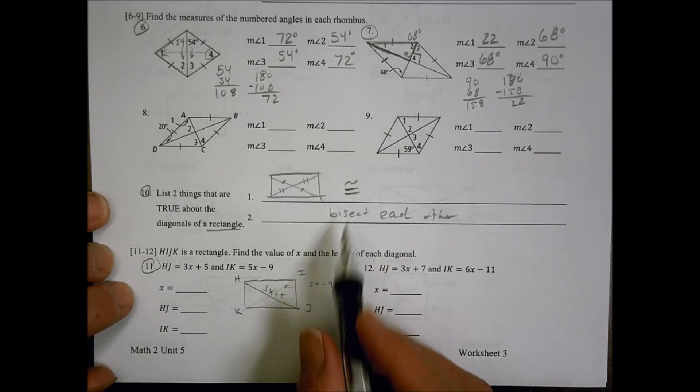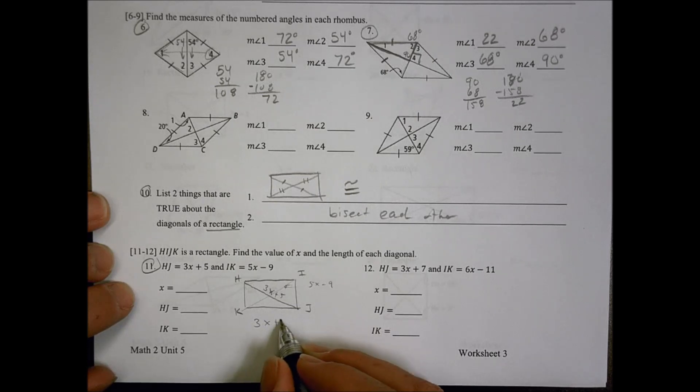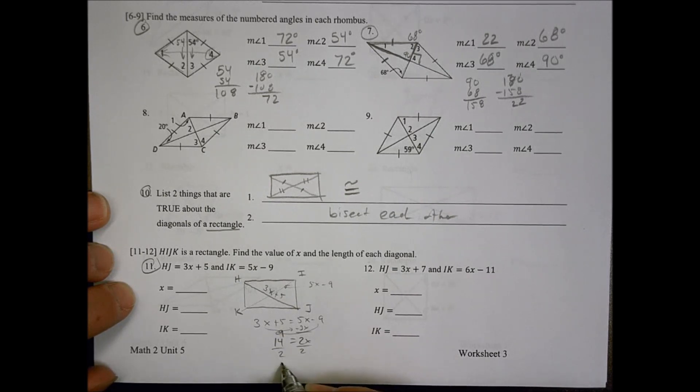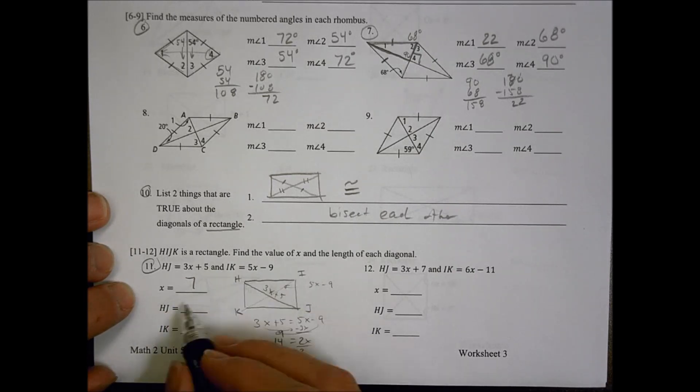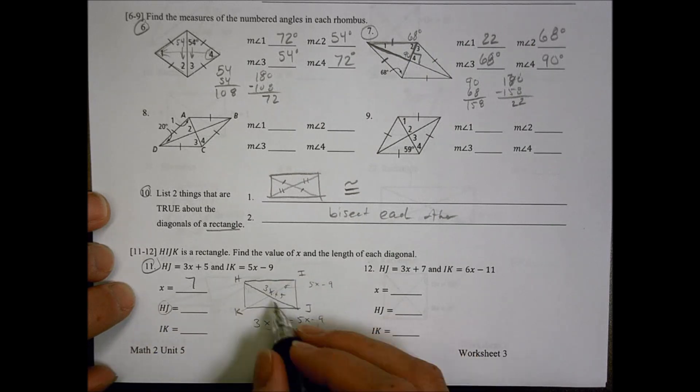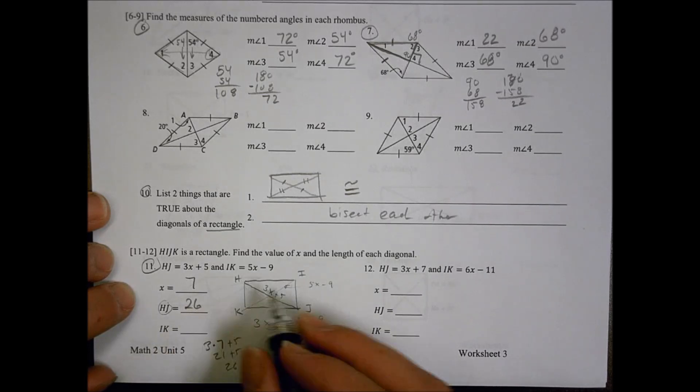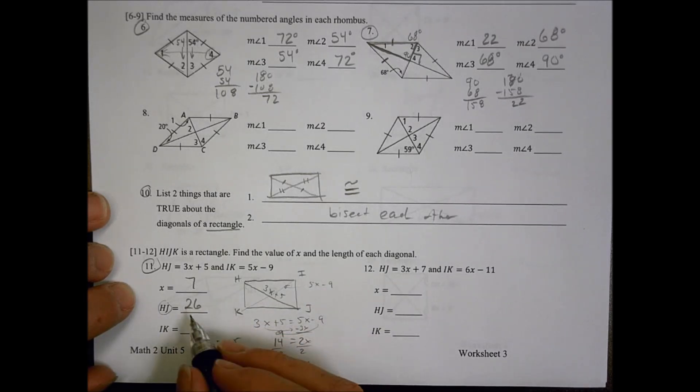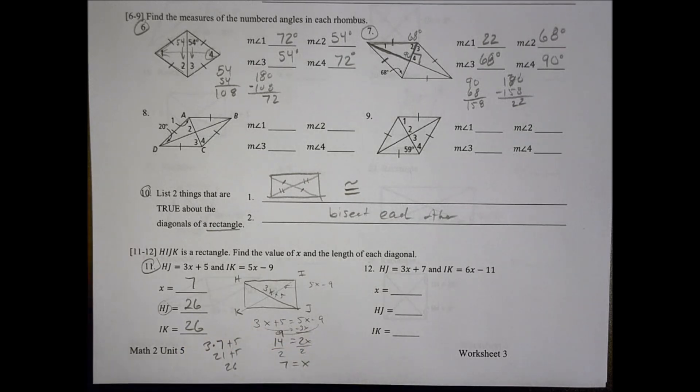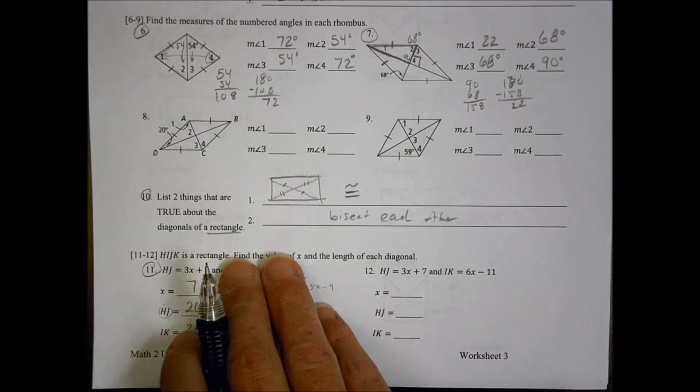We just said that the diagonals of a rectangle are congruent, so we'd set them equal to each other. 3X plus 5 equals 5X minus 9, so I'm going to subtract 3X over there and move that guy there, so I have 2X. I'm going to add 9 over here, so 5 plus 9 is 14, divide by 2, and X equals 7. But I'm not done, I need to plug that value back in, so I can plug it into HJ. So I have 3 times 7 plus 5 is 21 plus 5. 21 plus 5 is 26. If I chose to plug it back in there, I could, but I know that they're going to be congruent, so I don't need to, and I can just leave it as 26 for the other length as well. Let's look at the next slide.